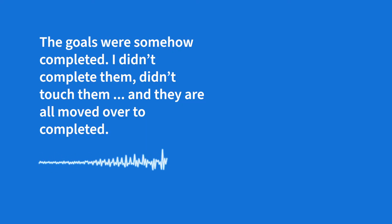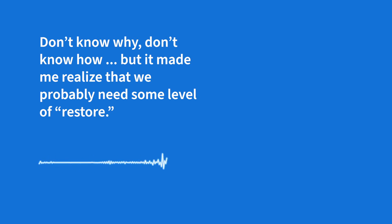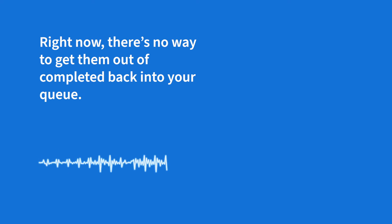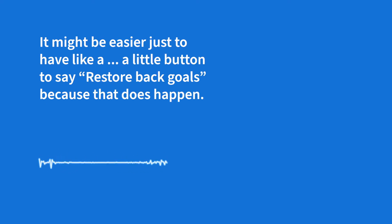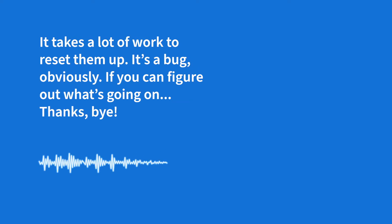Goals were somehow completed — I didn't complete them, didn't touch them, and they all moved over to completed. Don't know why, don't know how. But it did make me realize that we probably need some level of restore, because right now there's no way to get them out of completed back into your queue. It might be easier just to have a little button that says 'restore back to goals,' because if that does happen, it takes a lot of work to reset them up. It's a bug obviously. Yeah, what's going on? Thanks Mike.